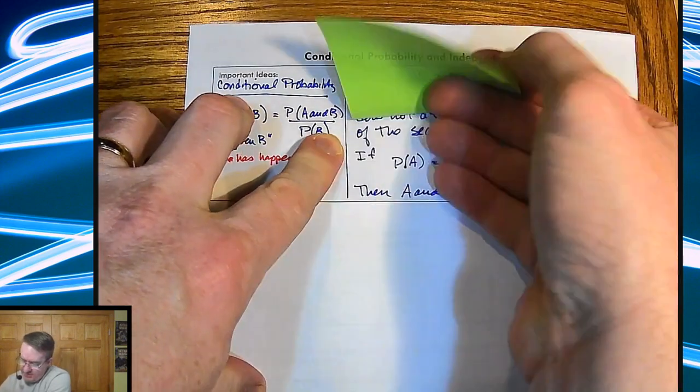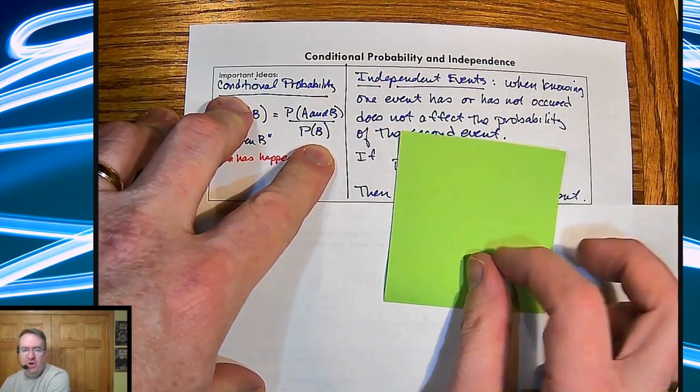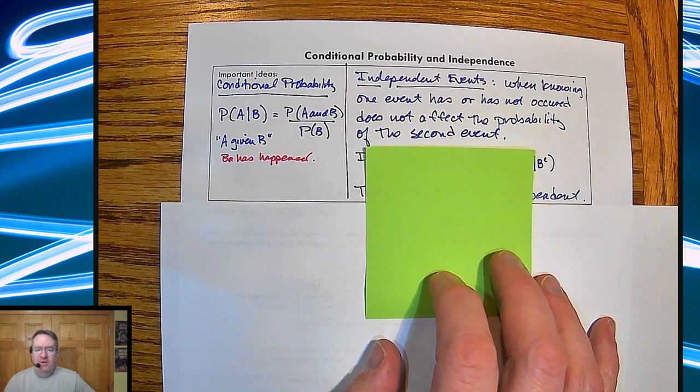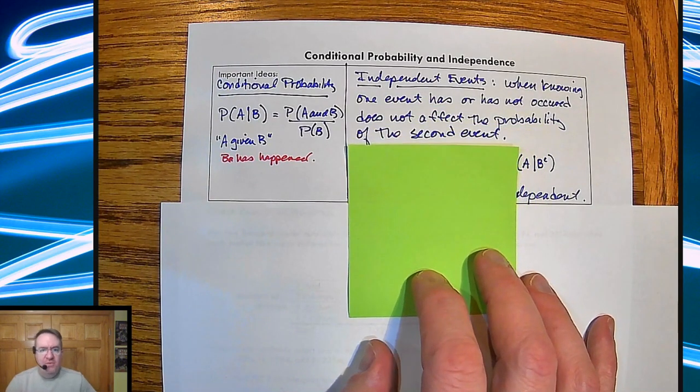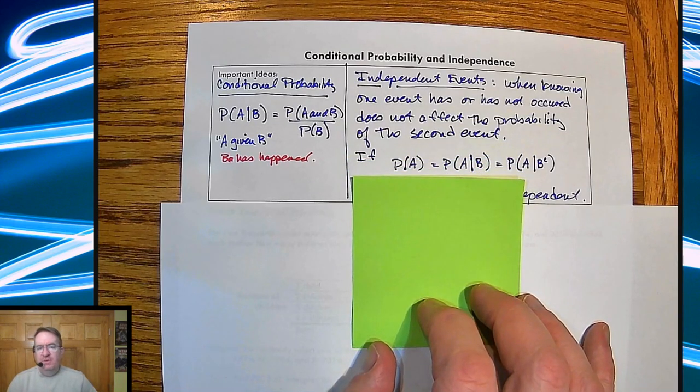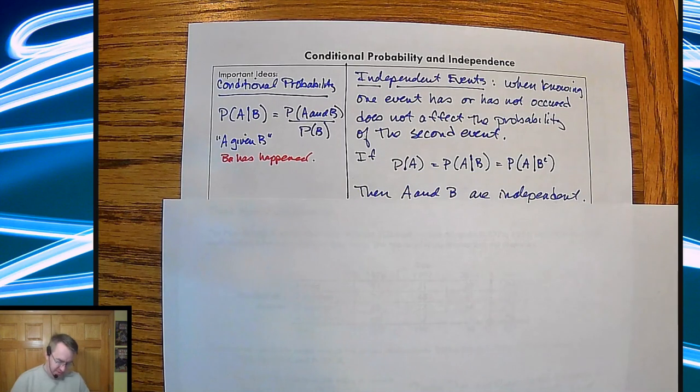Independent events, we've already kind of talked about, but let's formalize it out. So when knowing one event has or has not occurred does not affect the probability of the second event. And the math way of saying that is if the probability of A is equal to the probability of A given B, and that's equal to the probability of A given the complement of B, then A and B are independent.